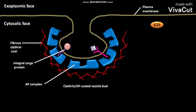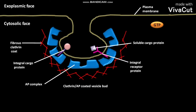Interaction between integral cargo protein and epi complex can be seen in this clathrin and epi-coated vesicle bud. As a result of this interaction, integral cargo proteins are incorporated into the membrane of the clathrin and epi-coated vesicle bud. Soluble cargo protein bound to integral receptor protein is also present in this clathrin epi-coated vesicle bud.